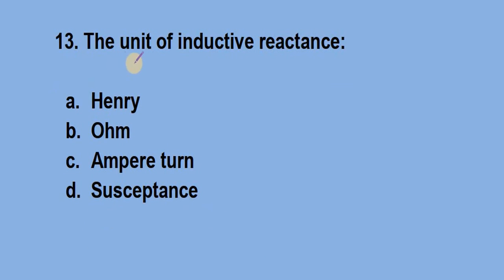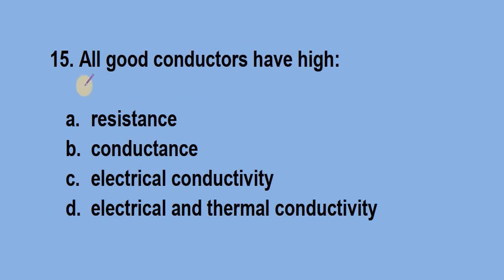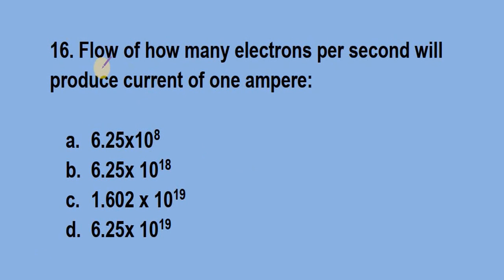Question number 13, the unit of inductive reactance. Answer is option B, ohm. Question number 14, the greatest value attained during one half of the cycle is called. Answer is option A, peak value. Question number 15, all good conductors have high. Answer is option B, conductance, high conductance.